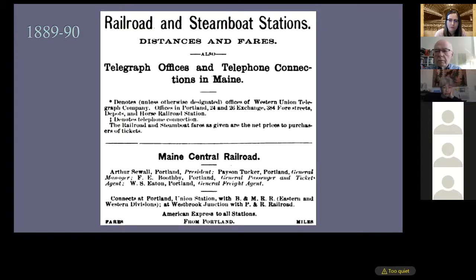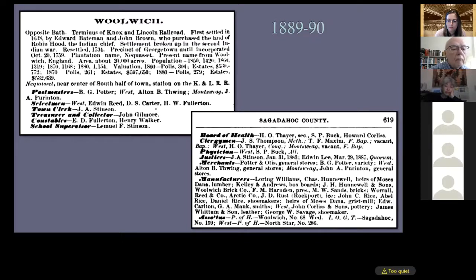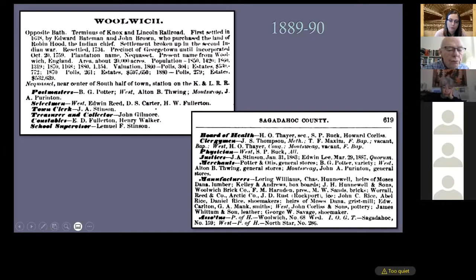By 1871 the Maine Register was organized more by county and towns than by topic — you might see it described as 'town statistics.' The most recent digital version available is 1856, which isn't yet organized by county, so the change happened somewhere between 1856 and 1871. The town entry for Woolwich in 1889–90 is fairly short but provides details about settlement, the town's population over time, town leaders, merchants, manufacturers, and associations. Woolwich had 1,050 people in 1810; decades later in 1870 the population was 1,168, and in 1880 it was 1,154.